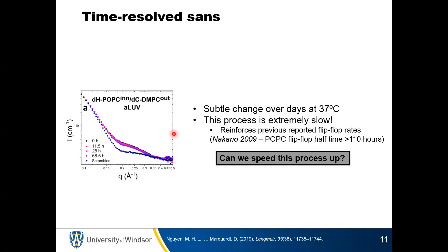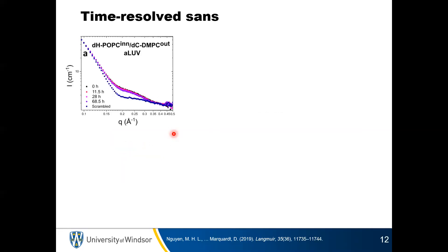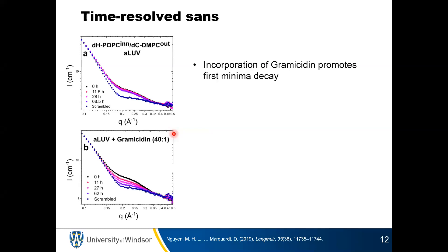This experiment isn't a good demonstration of measuring the kinetics because we haven't been able to see anything change over the course of the measurement. So the next step is: are we able to somehow speed this process up to monitor it using neutrons? We incorporated a pore-forming peptide called gramicidin — an antimicrobial peptide whose mechanism of action is forming pores or channels in the membrane, causing the cell to leak its internal components. It had been shown using other strategies that gramicidin can induce flip-flop.